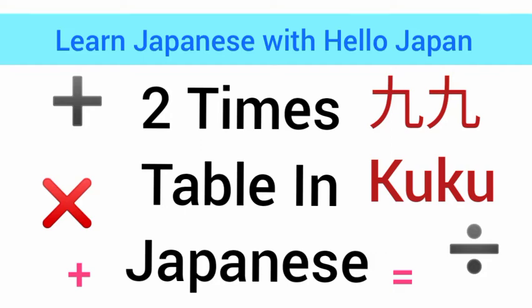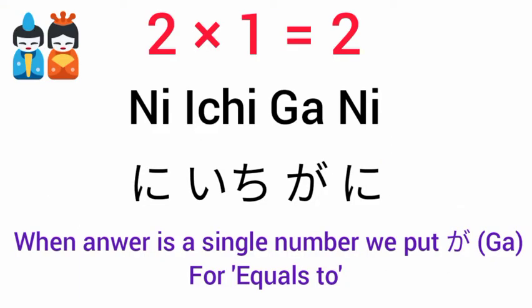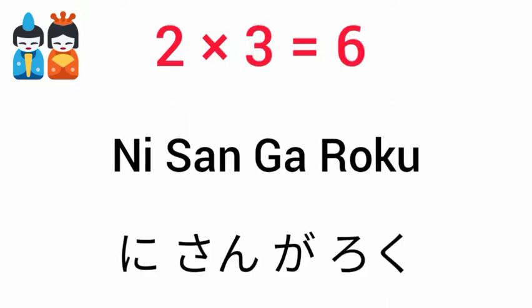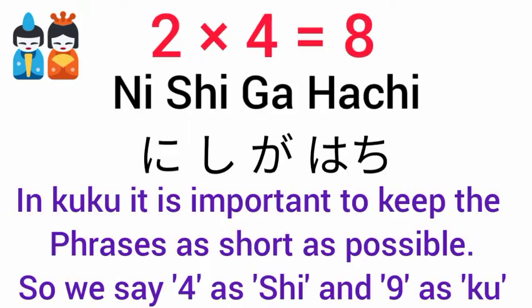Two times table in Japanese. When the answer is a single number, we put 'ga' before it, equals 2. 2×2 is read as 2. 2×3 ga 6. 2×4 ga 8.